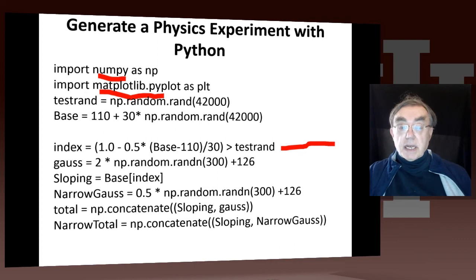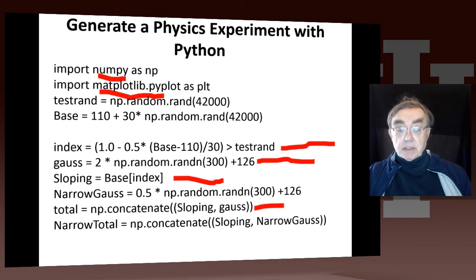Then we actually want some nice Gaussian, which is gonna be the Higgs. That's done here. This generates you 300 Gaussian events. This is the Higgs peak. And this thing here is the background. This thing here is the signal plus the background. This thing here is what happens if you measure the Higgs more accurately.